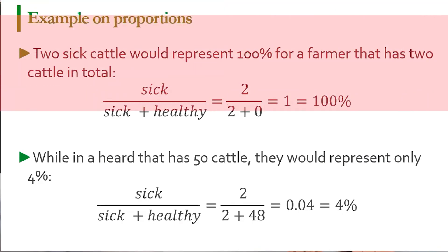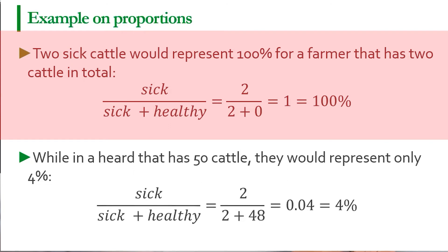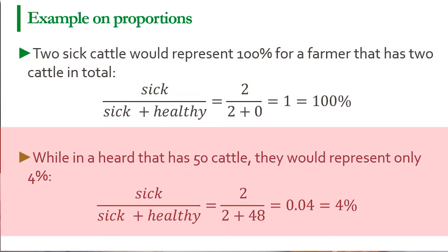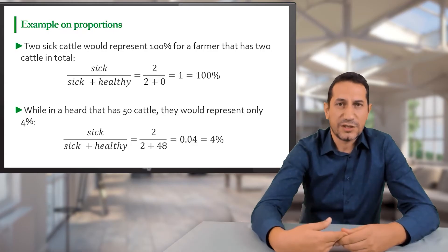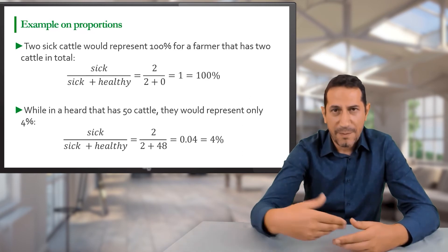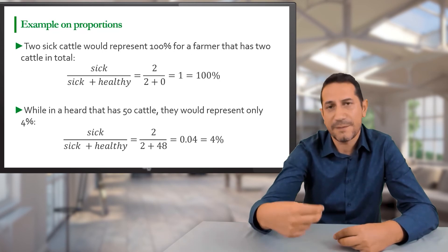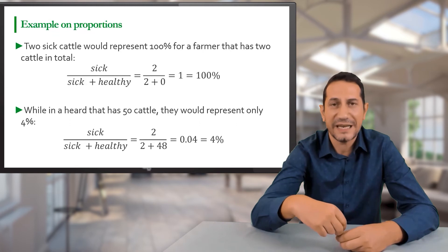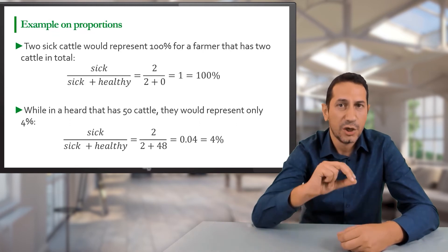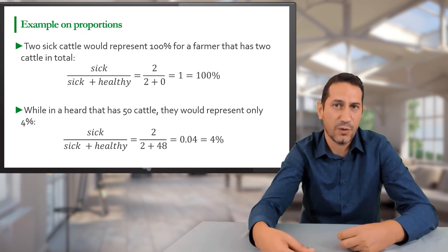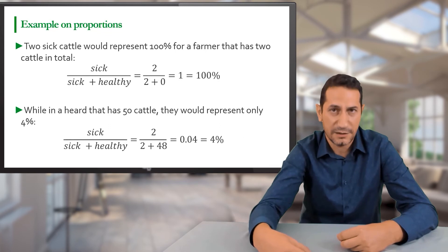For example, a farmer with two sick cows out of a total of two cows has 100 percent disease in his population. In another herd of 50 cattle with two sick cows, the proportion is 4 percent. We can compare which population has more disease. The key point is that a proportion without specifying the population it derives from is meaningless — it is of paramount importance to always report the population alongside the proportion.